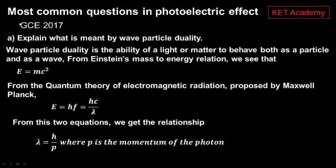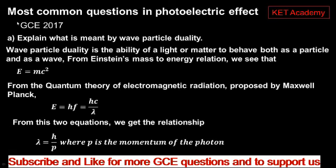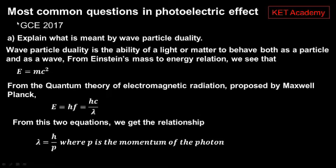From these two equations we get the relationship lambda equals h over p, where p is the momentum of the photon. Since the particle or light is behaving both as a wave and as a particle, we assume the energies are equal. When we equate MC squared to hc over lambda, we get the de Broglie wavelength.